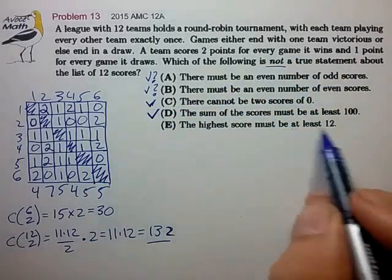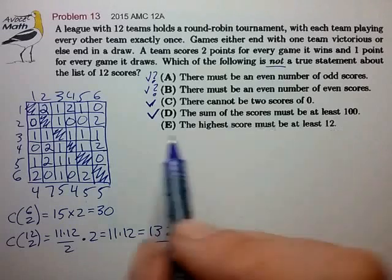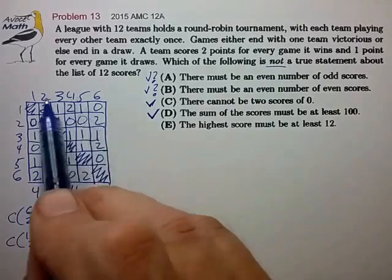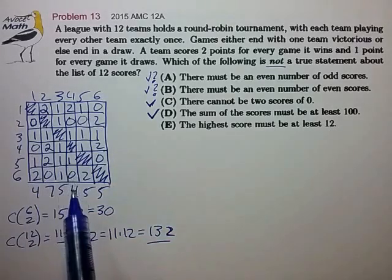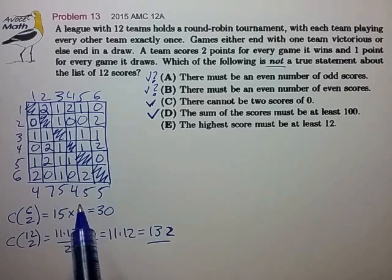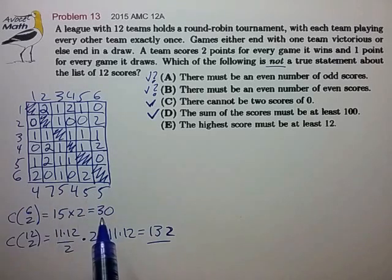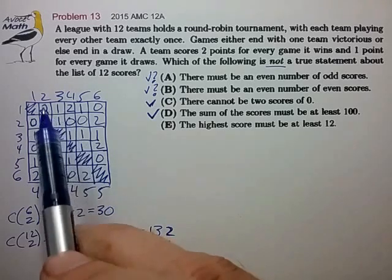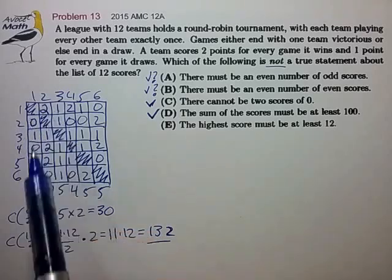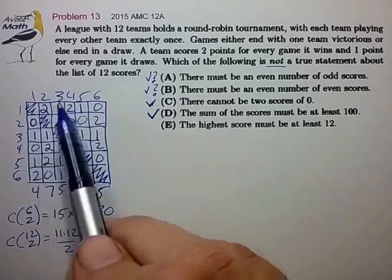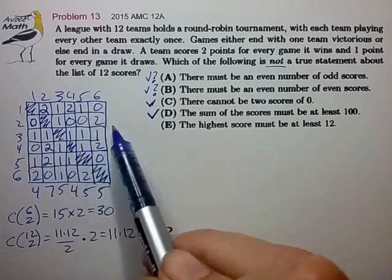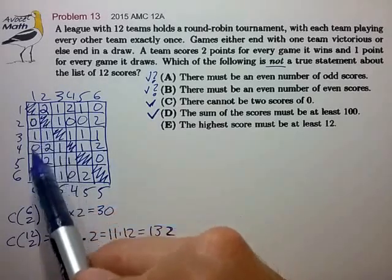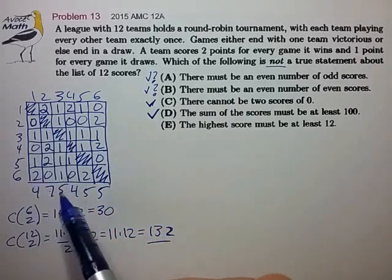The highest score must be at least 12. Let's see here. In this case, with six teams, I could get the lowest score for all of the teams by placing ones in each of these boxes. If I basically made draws for every single match, I can see how I would get sums of five for each of these columns.